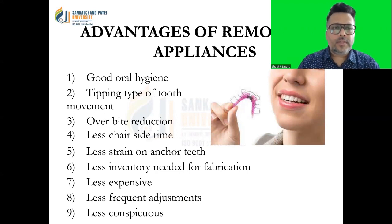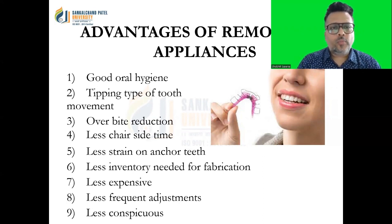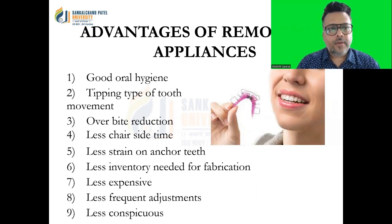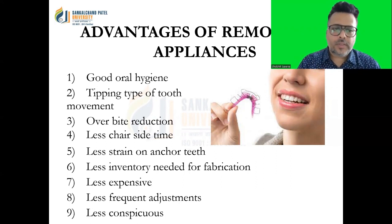The advantages of removable appliances: First and foremost is good oral hygiene, because as they can be removed from the oral cavity, they are very easy to clean. Tipping type of tooth movement is seen with removable appliances. Overbite reduction is seen. It consumes less chair-side time. They have less strain on anchor teeth. Less inventory is needed for fabrication. These are cheap or less expensive appliances. They require less frequent adjustments. And finally, they are less conspicuous.